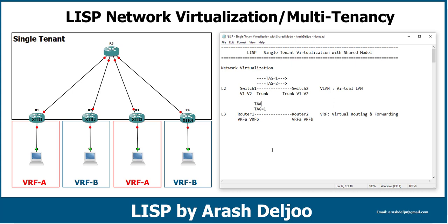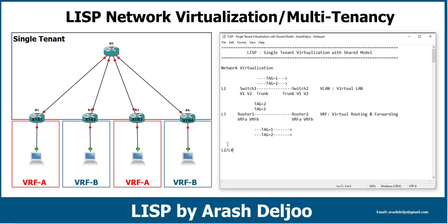Now again, we have two virtual networks — two separated and independent virtual networks — over one physical network. This is layer 3 network virtualization. We can also see the combination of layer 2 and layer 3 virtualization in networks.